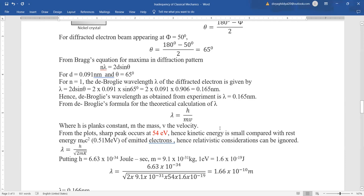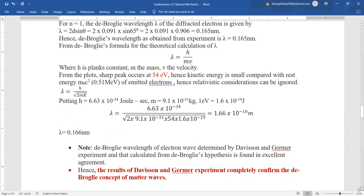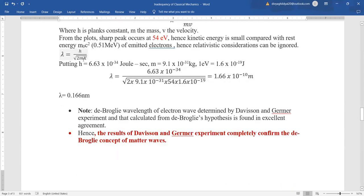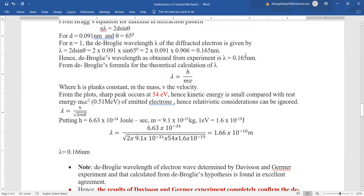Since kinetic energy is small compared with rest mass energy of emitted electrons, under relativistic considerations we write lambda equals h over square root of 2mk. Putting the numerical values—h is Planck's constant, mass of electron, and k the kinetic energy at 54 electron volts—we get the answer as 1.66 times 10 to the power minus 10 meters, which is in full agreement with the experimental value.